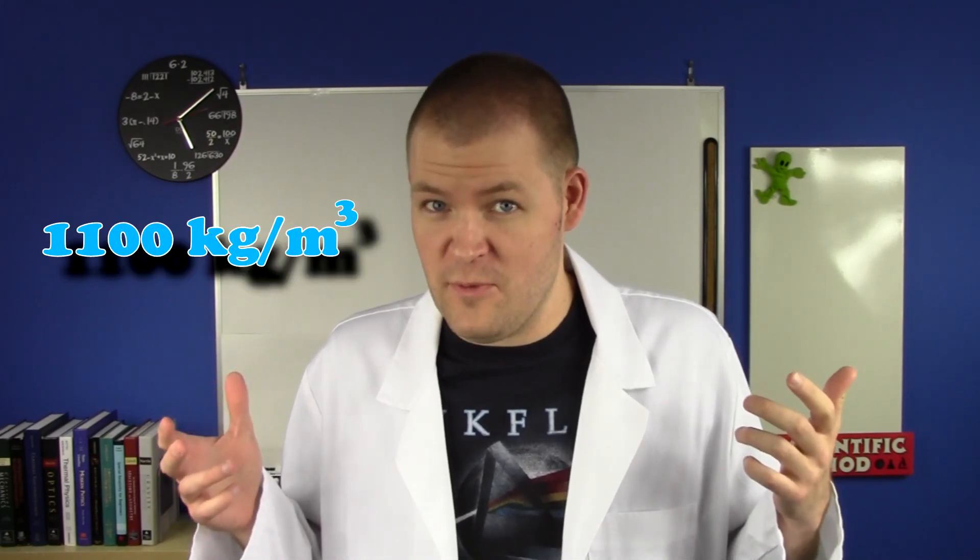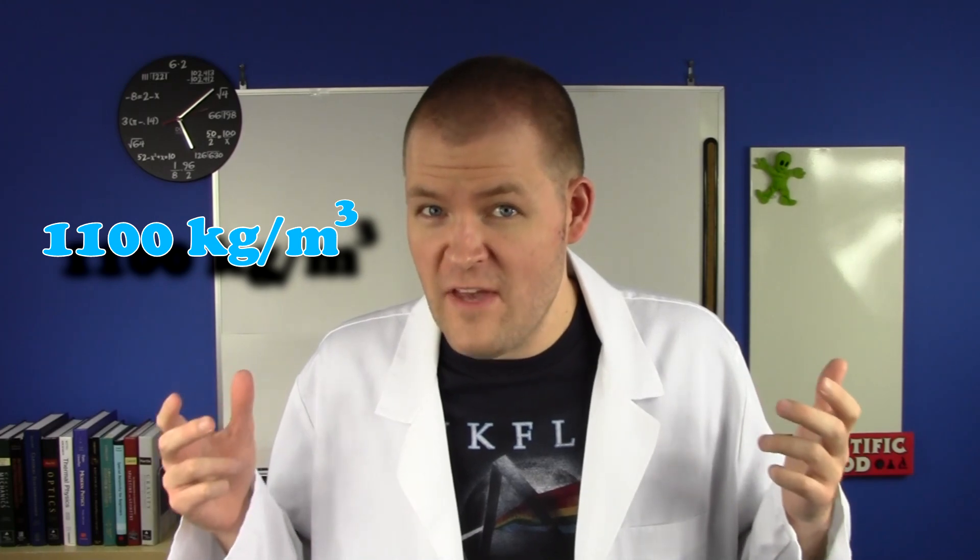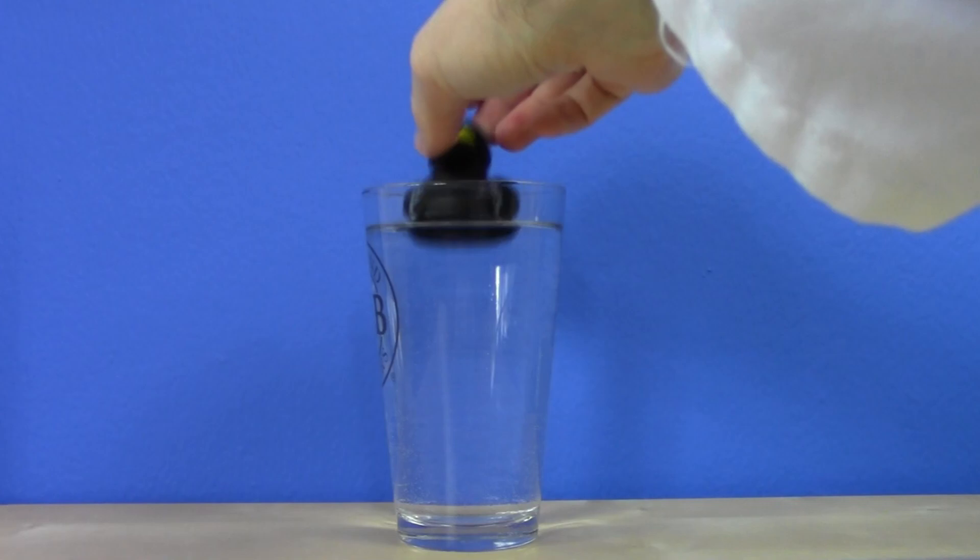Here's the problem. Ninja Ducky is made of soft rubber, which has a density of about 1,100 kilograms per cubic meter. That's 100 bigger than the value for water. So the density rule says Ninja Ducky should sink. Debunked.